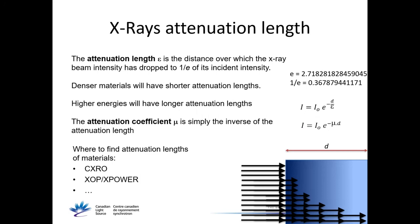What is the attenuation length? It's the distance over which the X-ray beam intensity will drop to 1/e of the incident intensity. So yes, the intensity is going to fall — and that's the attenuation length.